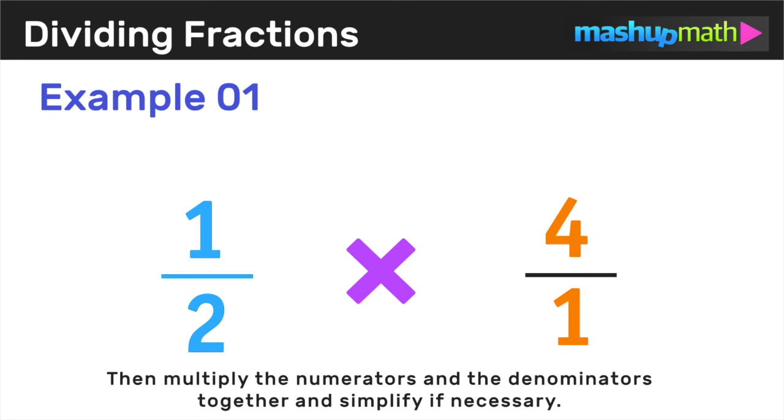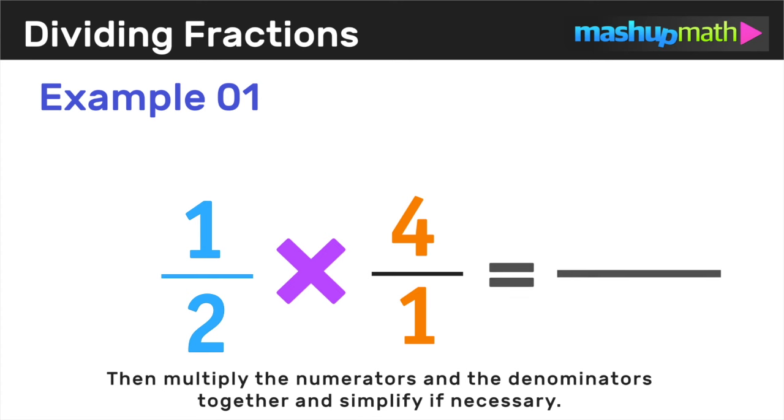Now that we have performed keep change flip, the last step is to multiply the numerators together and the denominators together and then simplify the resulting fraction if necessary. Notice that 4 over 2 can be simplified and is equal to 2. So now we have just used keep, change, flip to find our final answer.